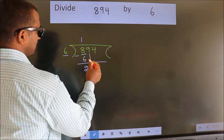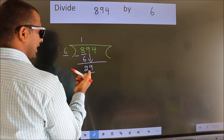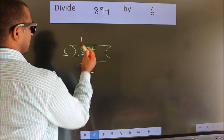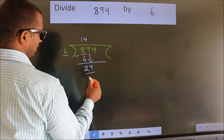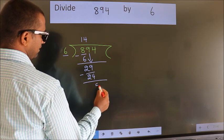After this, bring down the beside number. So, 9 down. So, 29. A number close to 29 in 6 table is 6 times 4 is 24. Now we subtract. We get 5.